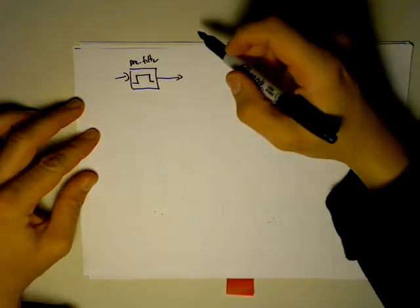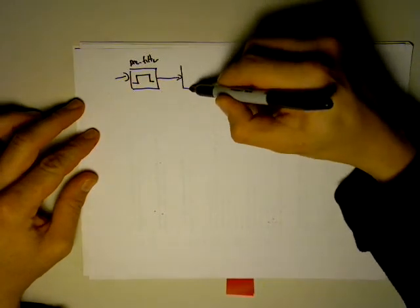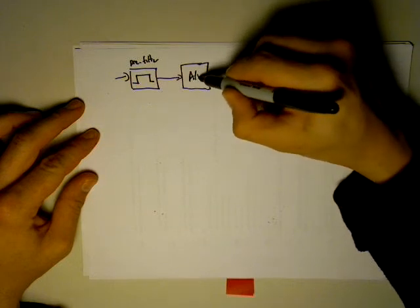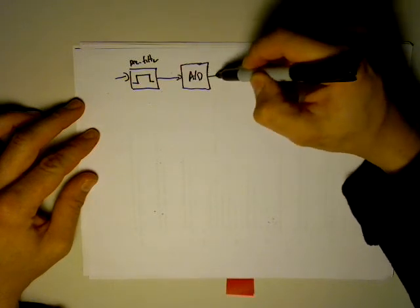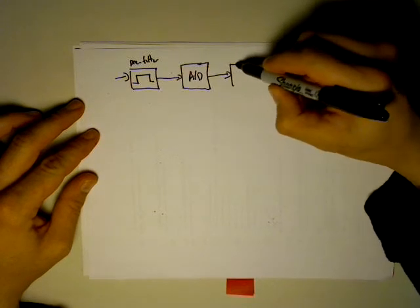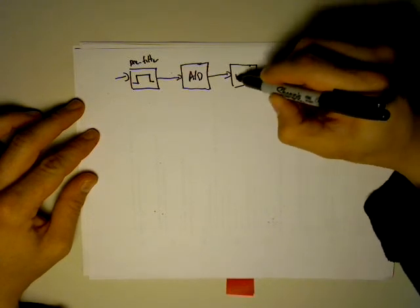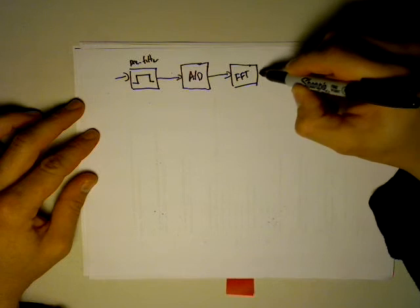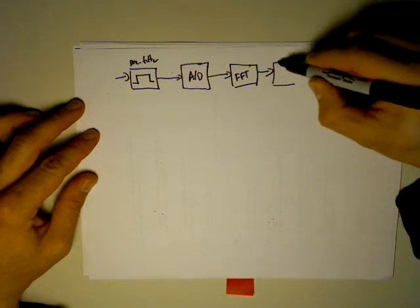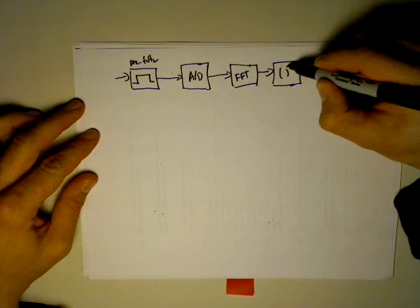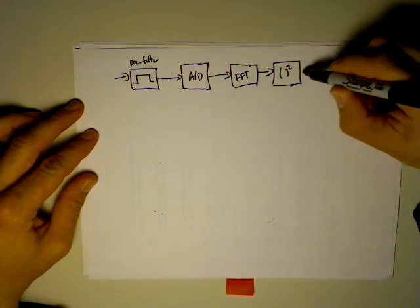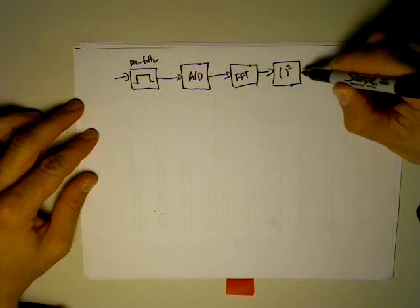Then, following that, we perform our analog to digital conversion because we want to process the digital data. So that's our analog signal. We get digital samples at the output. We then apply our FFT. So now what we have are frequency samples that we then pass through the square law device. And what that does is that actually gives us the magnitude squared of the frequency samples. So that gives us energy.